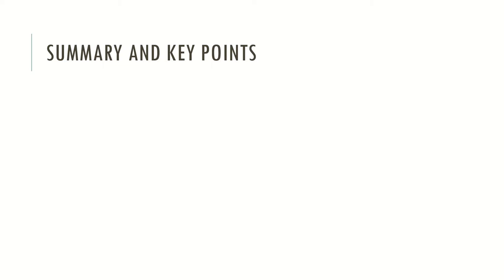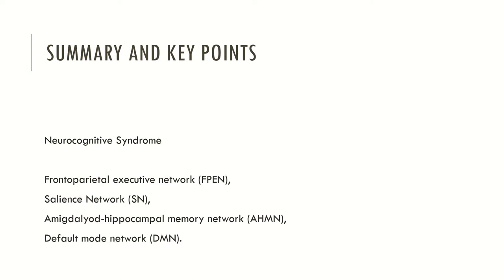These networks are the default mode network, the frontoparietal network, the salience network and the amygdaloid-hippocampal network. We saw that the neurocognitive syndrome has several symptoms associated with these neural networks, which are extremely important in cognitive and mental processing. All these networks are important in mental processing and when there are impairments, these symptoms tend to be clustered together and manifest in the flow of consciousness, resulting in daily life impairments and difficulties in psychological well-being.